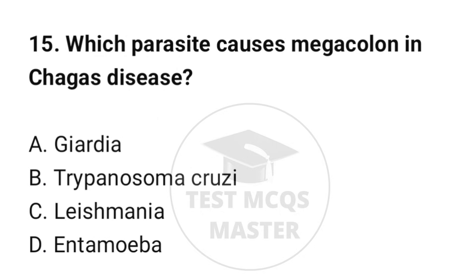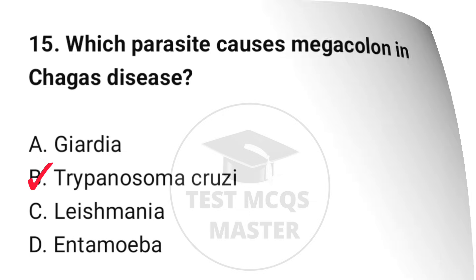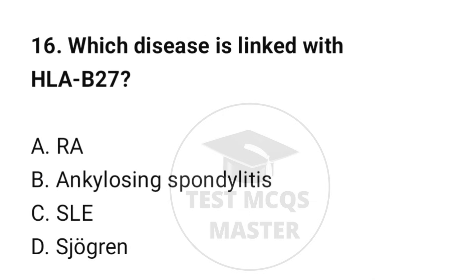Question number 15: Which parasite causes megacolon in Chagas' disease? The correct option is B: Trypanosoma cruzi. Question number 16: Which disease is linked with HLA-B27? The correct option is B: Ankylosing spondylitis.